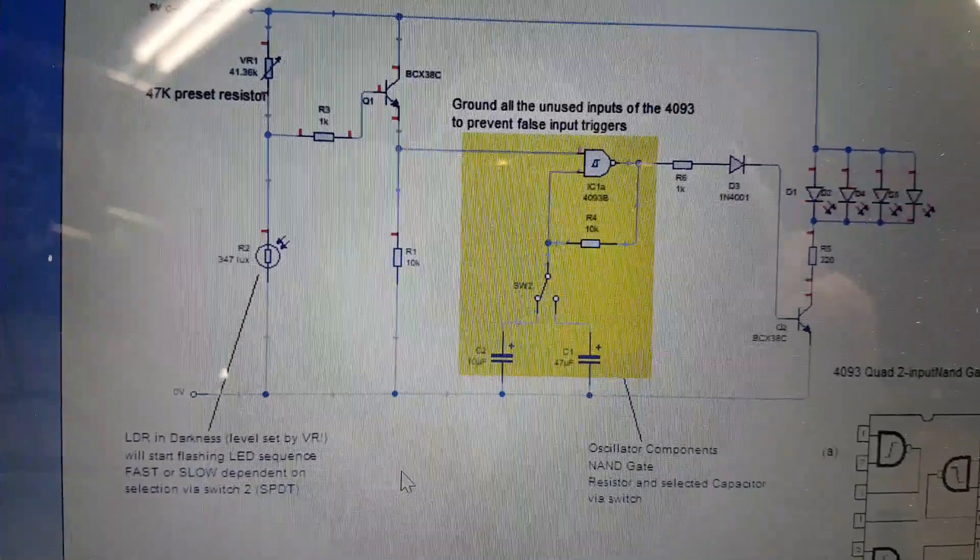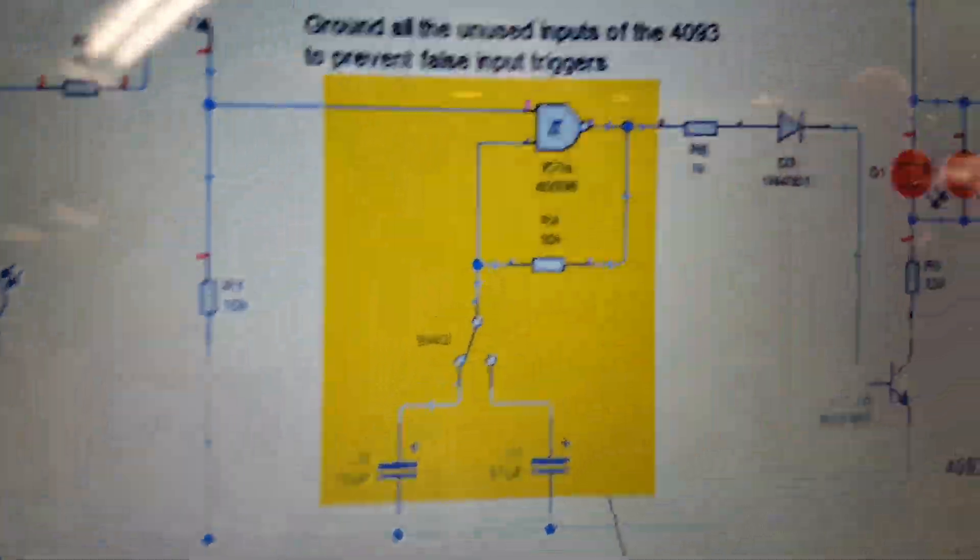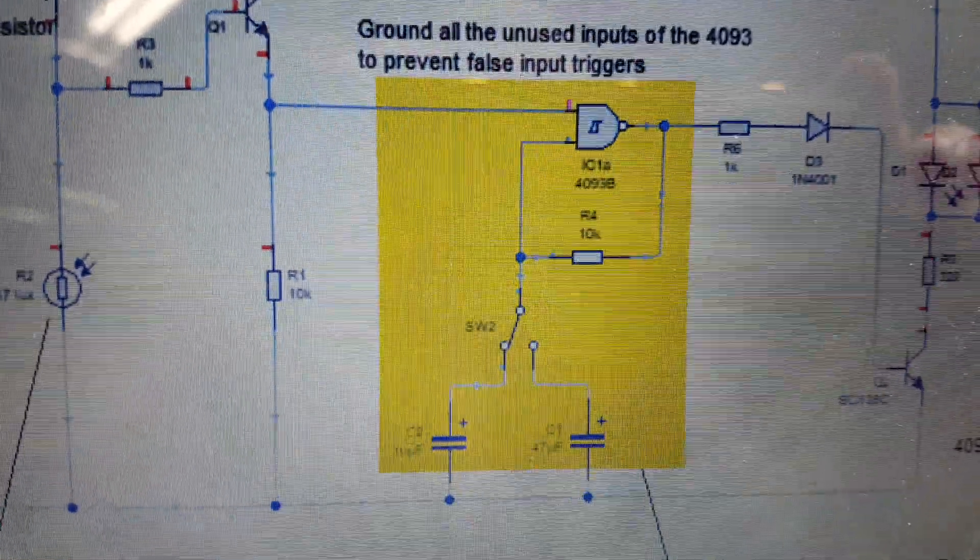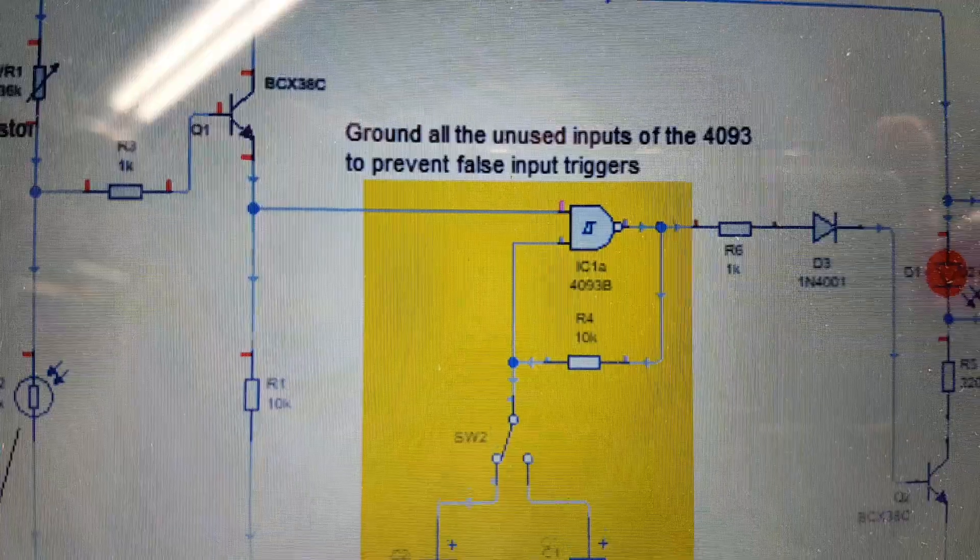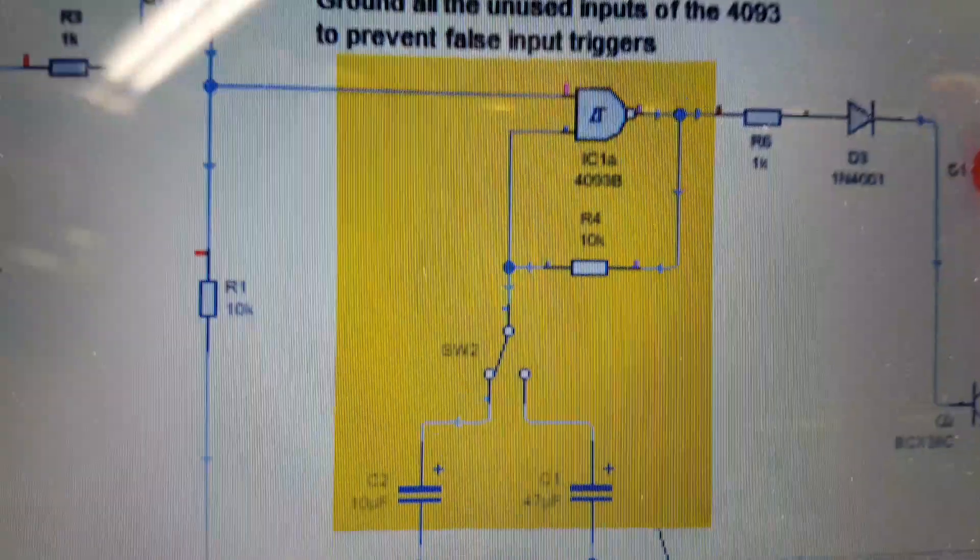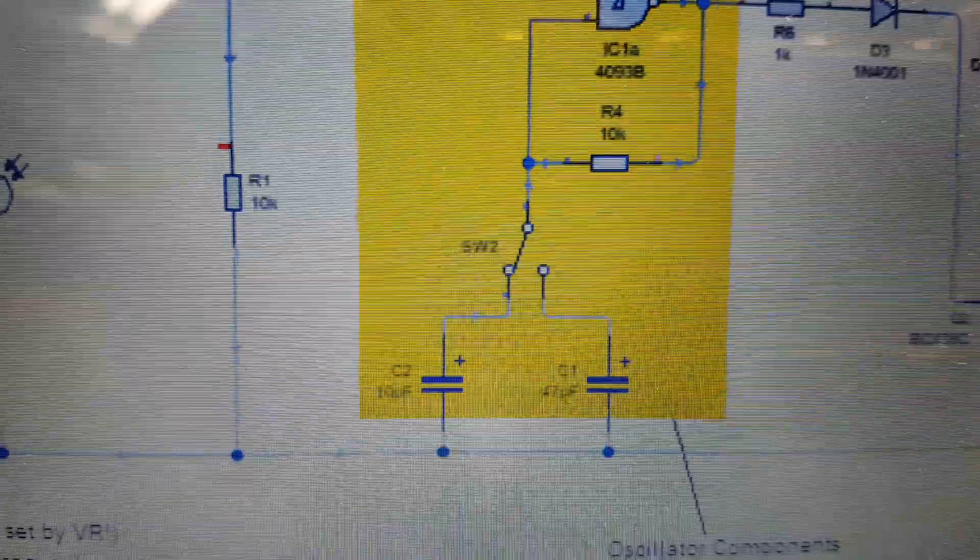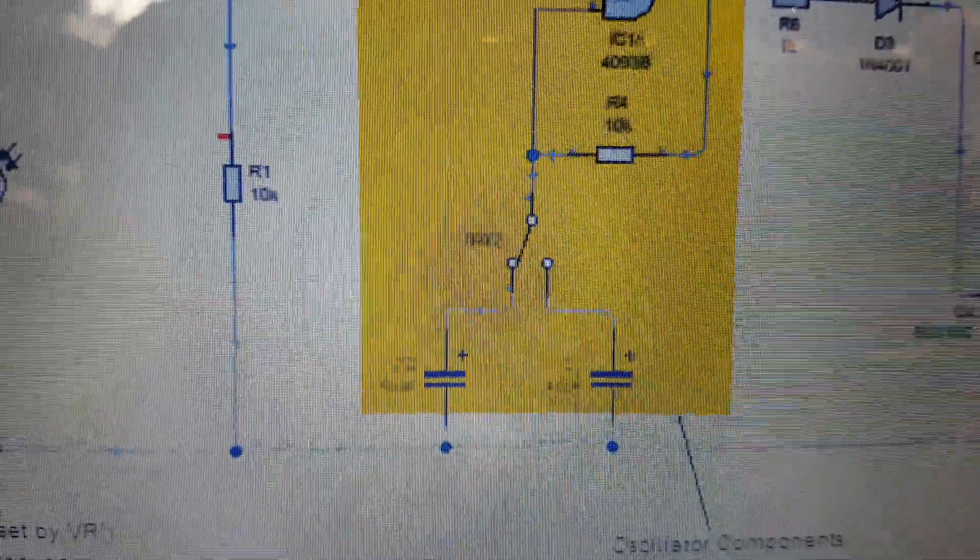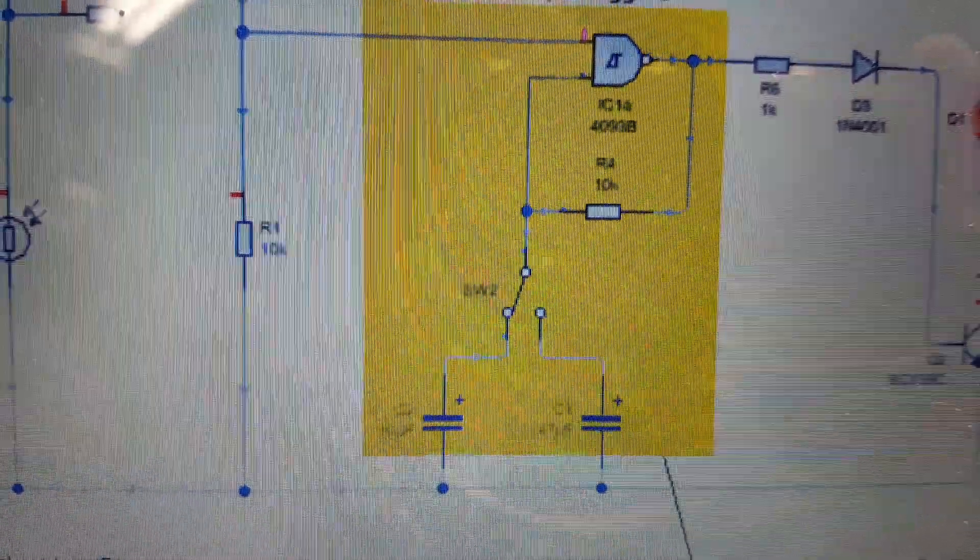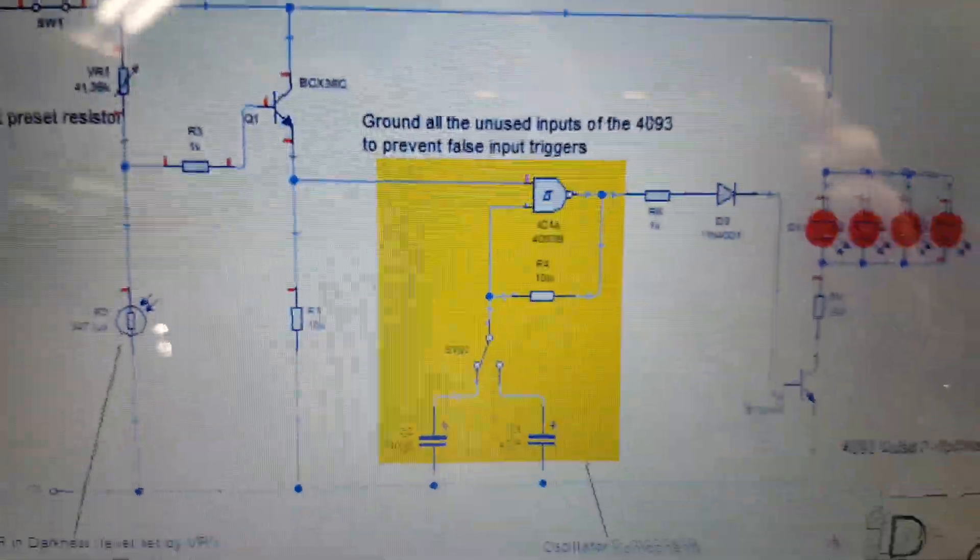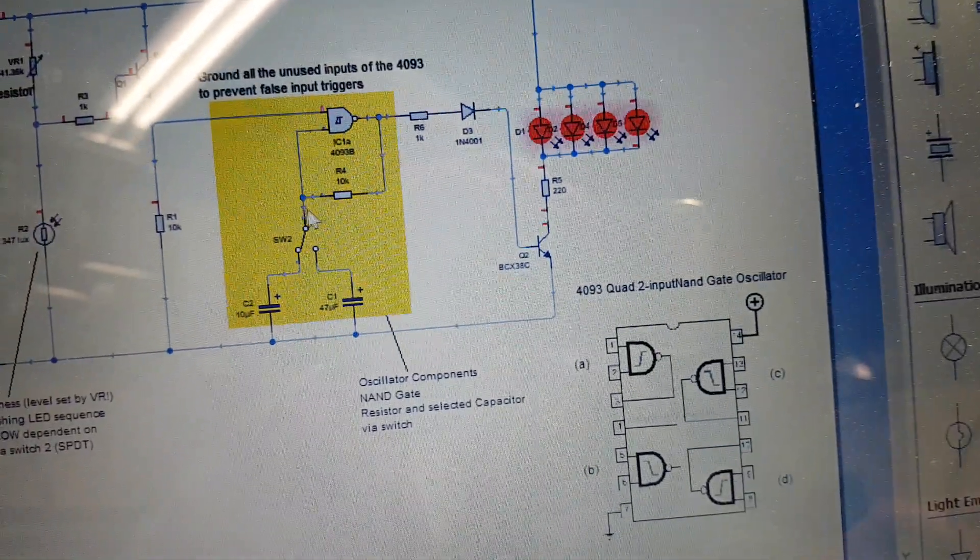Basically that's what's called an oscillating NAND gate, which means effectively these components in the yellow here. There's the logic gate for the NAND and it uses in this case the R4 10k resistor, and it uses one of the two capacitors here which are selected via that switch. So that means you can either have a fast rate or you can have a slow rate depending on which way the switch is going.